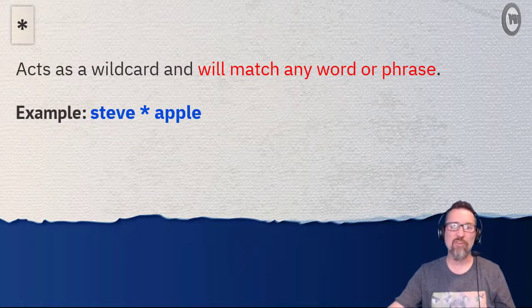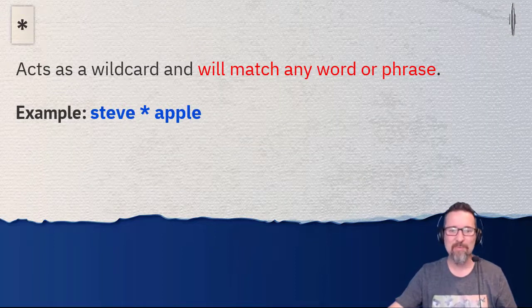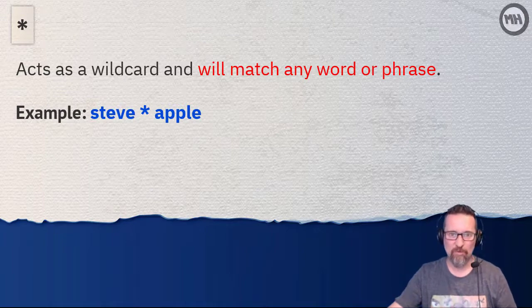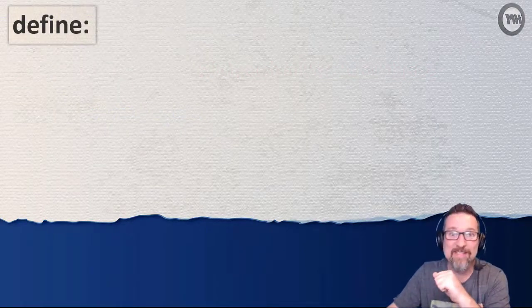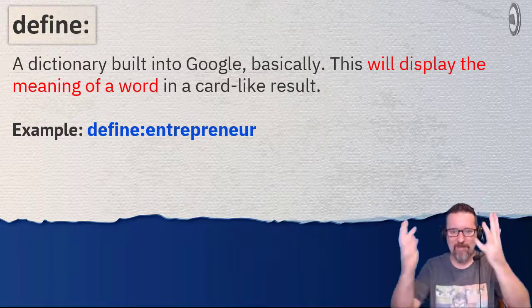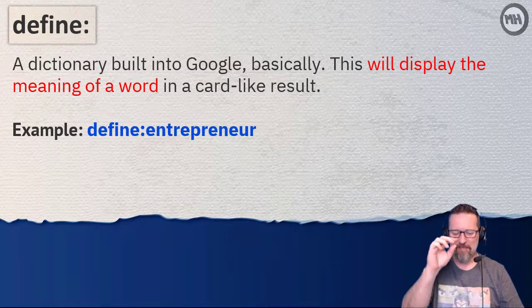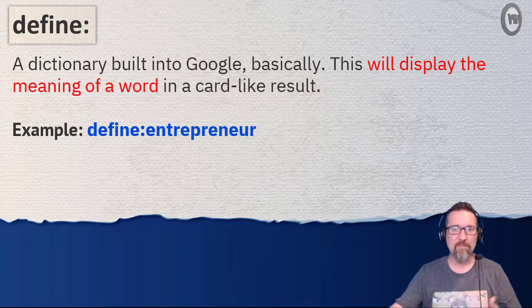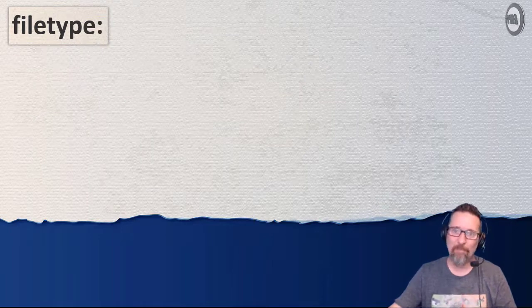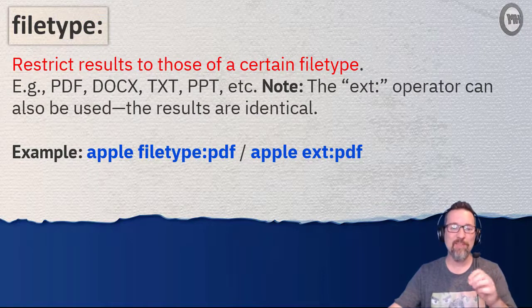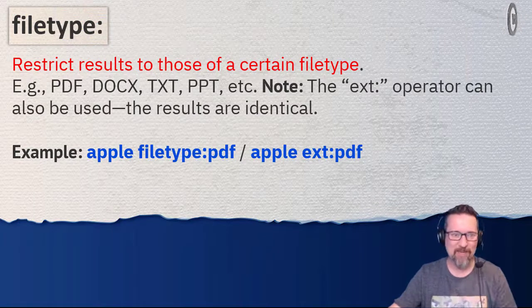Then we have the wildcard — as you know in most computer technology it represents everything and anything, so it'll match anything at all. One of my favorites is 'define' — it's your own personal dictionary. Just type 'define:' followed by a word and it will return the definition from a dictionary. You can even search for specific file types — search for information contained within a particular file type by typing 'filetype:' followed by what you're looking for.